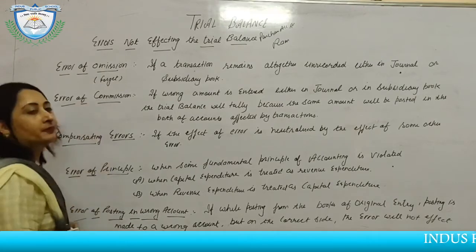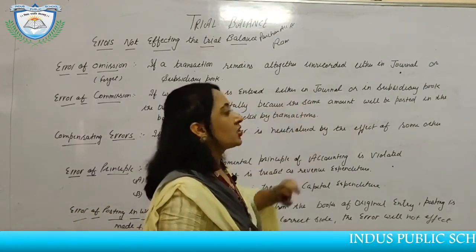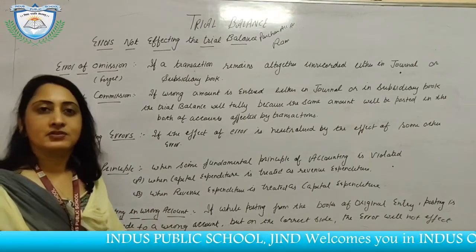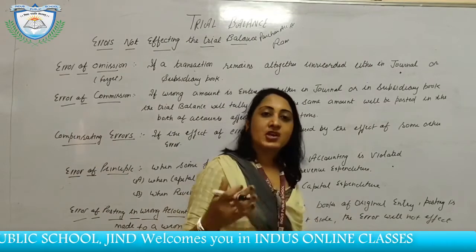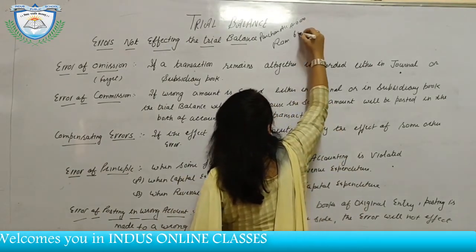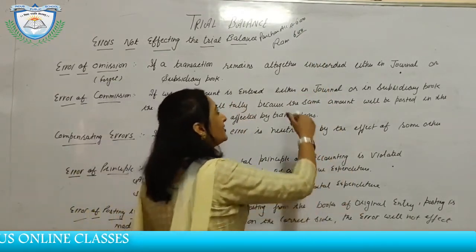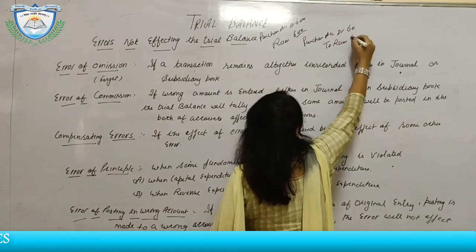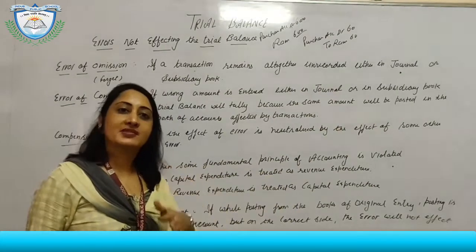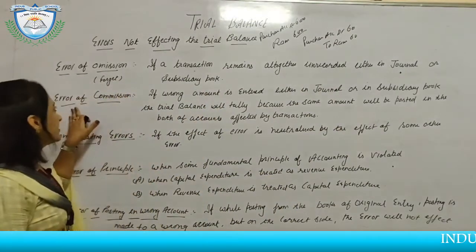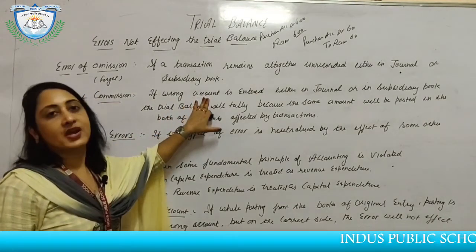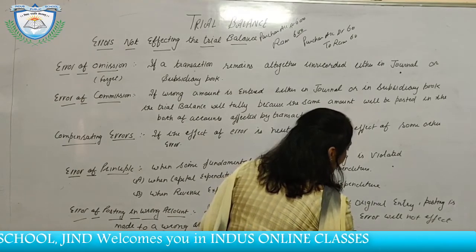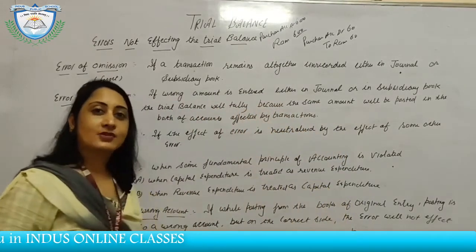The second error is error of commission. If a wrong amount is entered either in the journal or subsidiary book from the start, it will not be disclosed by the trial balance. For example, we purchased goods from Ram for rupees 600, but from the beginning we recorded the entry as Purchases debited to Ram for rupees 60. Since both sides carry rupees 60, the total will tally. So this error also does not affect the trial balance.